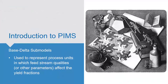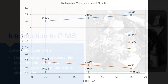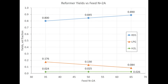The second type of submodel is a base delta submodel, and it represents process units in which the feed stream qualities or operational parameters will affect the yield fractions. Let's look at some example yield data for a reformer, which we will use to build a base delta submodel table in PIMS.